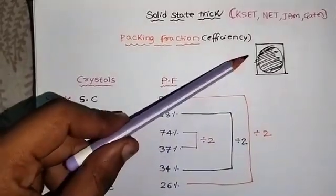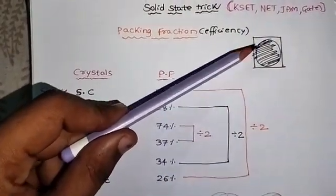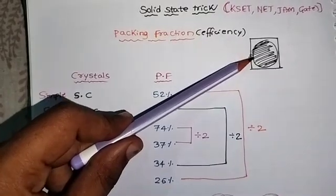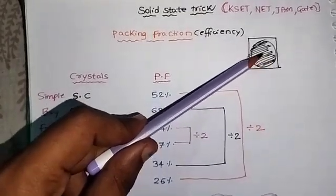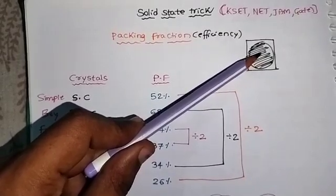First we should know what is packing efficiency. Packing efficiency is nothing but the volume occupied by the atoms in a cube. This portion is called as packing fraction or packing efficiency.